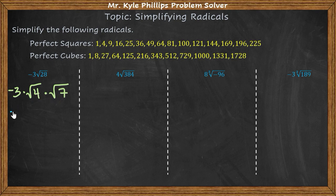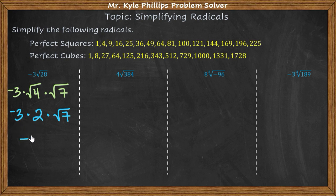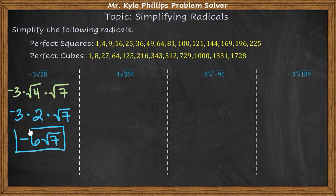Now we can simplify because 4 is a perfect square. So this is going to be negative 3 times 2 times the square root of 7. Negative 3 times 2 is negative 6, giving us negative 6 times the square root of 7 as our simplified radical.